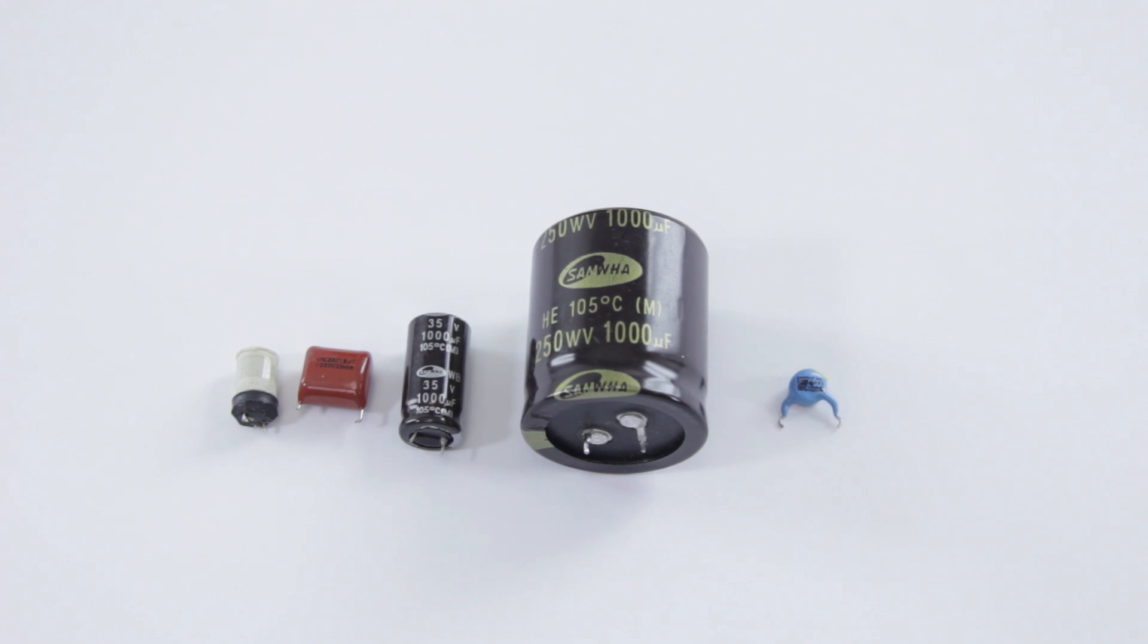If those go bad, generally it acts like a bad lamp. The TV may come on briefly and then the backlights might shut off. The rest of the TV could stay on but your backlights are going to turn off.